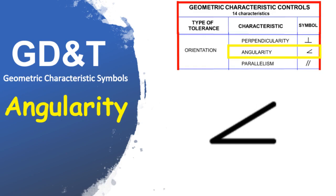Angularity tolerance specifies a tolerance zone defined by two parallel planes at a specified angle other than 90 degrees from a datum plane or axis. Angularity is the orientation of one feature to another at an angle. It can be a 2D line referenced to another 2D line or plane. Most commonly it references one surface plane to another datum plane in a three-dimensional tolerance zone. For example, if a part needs to hook into another part at an angle of 45 degrees, you would use angularity on the bent tab that mates to ensure it is always at its proper orientation.